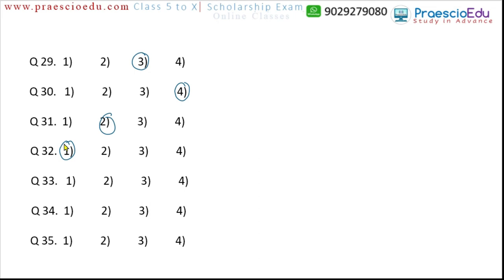Question 33: dancer, ironsmith, carpenter, and mason. Mason, carpenter, and ironsmith are skilled craftspeople, but dancer is only a performing artist. So option one, dancer, is the different one. Question 34: file, pencil, table, and notebook. File, pencil, and notebook are stationery items, but table is furniture. So table is the different one for question 34.